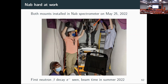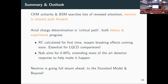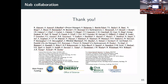We should hopefully have some statistics-only results in about a year or two for 'little a.' To conclude: I tried to convince you that CKM unitarity and these BSM searches have gained really interesting developments in the past couple of years. The neutron is a clear path forward with the axial charge ga on the critical path. There's both theory and experimental progress, a lot of new people coming in with new ideas. The neutron is going full steam ahead — standard model, or beyond.